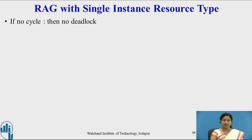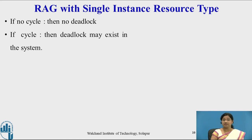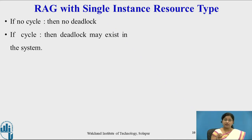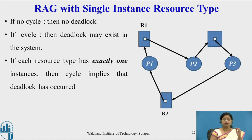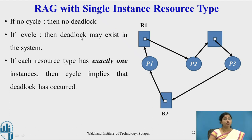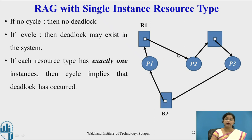In a resource allocation graph, if there is no cycle, then there is no deadlock. The resource allocation graph is used to check whether the system is in a deadlock state or not. If the resource allocation graph contains a cycle, then deadlock may exist. If there is no cycle, there is no deadlock. If each resource type has exactly one instance, then a cycle implies that deadlock has definitely occurred in the system.